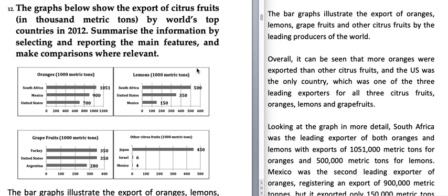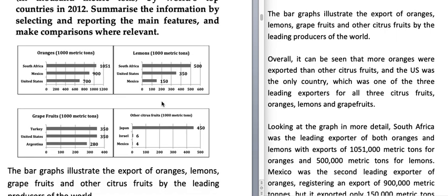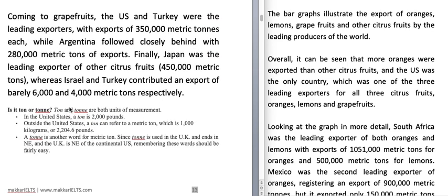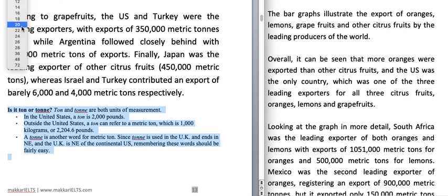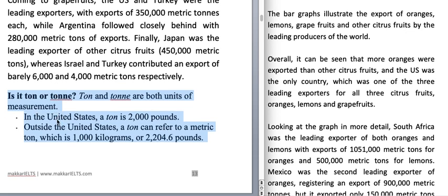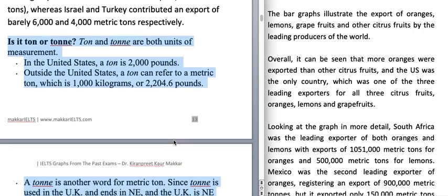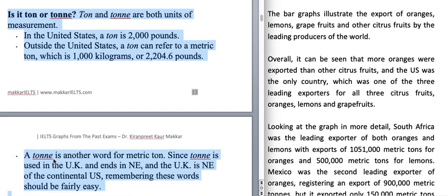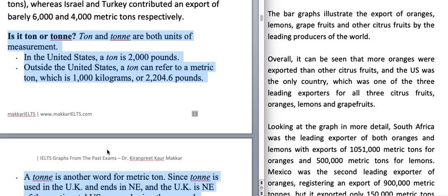I didn't know that ton and tonne were slightly different. Although these two units are used interchangeably, there is a slight difference. In the United States, a ton is 2,000 pounds. Outside the United States, a tonne refers to a metric tonne, which is 1,000 kilograms or 2,204.6 pounds. So 'tonne' spelled T-O-N-N-E is another word for metric tonne, used in the UK, while T-O-N is used in the US.